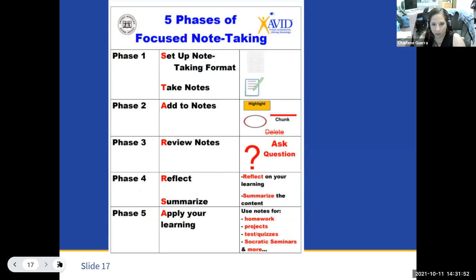So this is the one-pager on the five phases of focused note-taking. So you can see phase 1 is really setting up and taking the notes, adding to the notes. Phase 3 is reviewing the notes and asking questions. And phase 4 is either reflecting or summarizing. And then phase 5, ultimately, students will apply the notes.